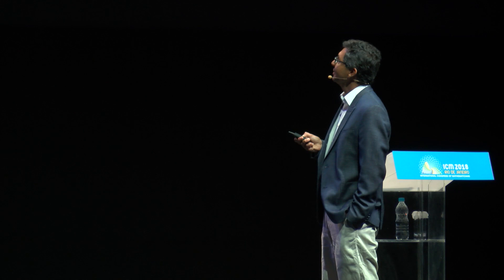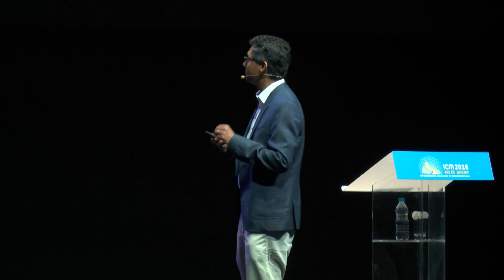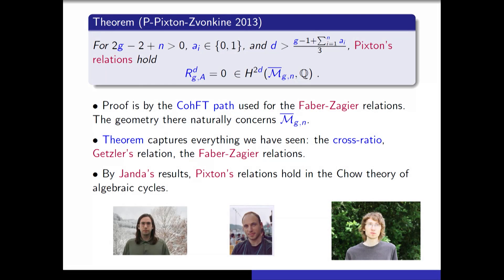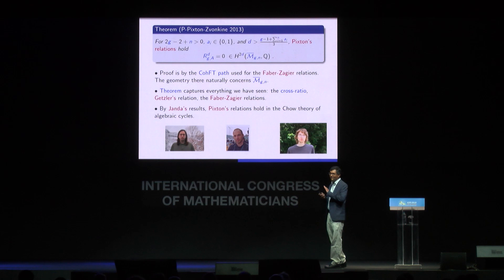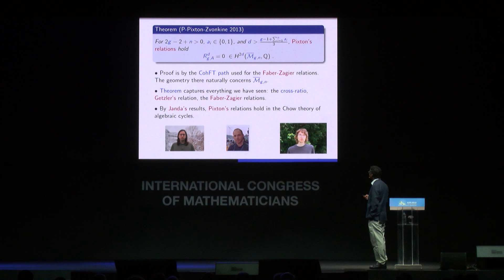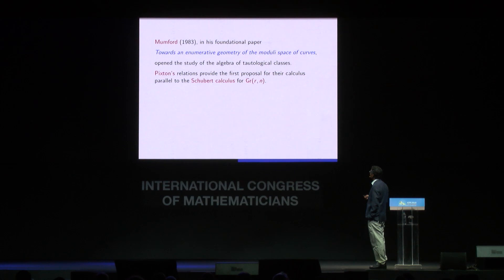The theorem, proved by myself, Pixton, and Zvonkine in 2013, is that Pixton's relations hold: for any fixed genus g, number of marked points n, binary vector A, and degree D in the specified range, this explicit summation over boundary strata, κ classes, and ψ classes is exactly zero. The proof uses the CohFT approach — in essence, the second proof of the Faber-Zagier relations extends to the boundary in the CohFT language, and the natural outcome is Pixton's relations. This theorem captures everything: Pappus's cross ratio, Getzler's relation, all genus 0–3 relations, and all Faber-Zagier relations.